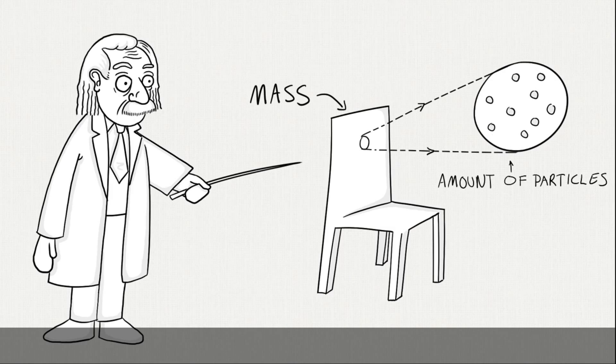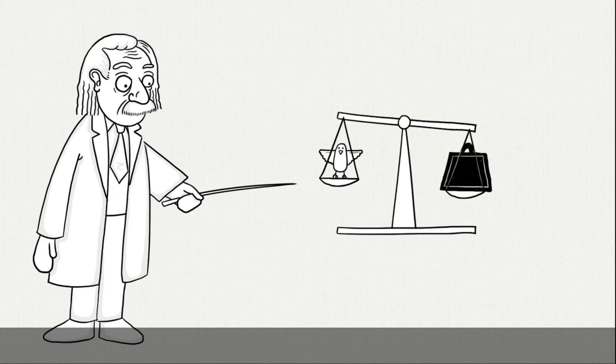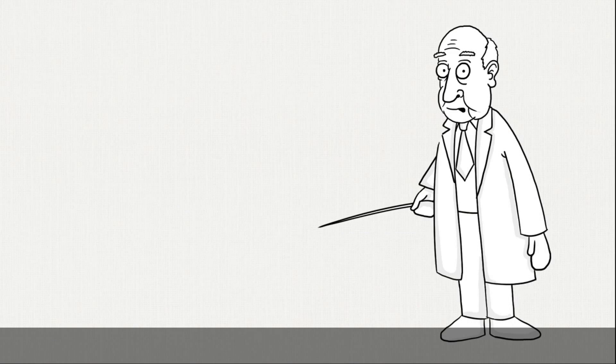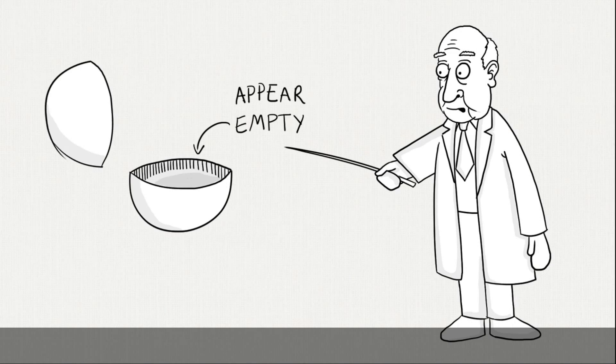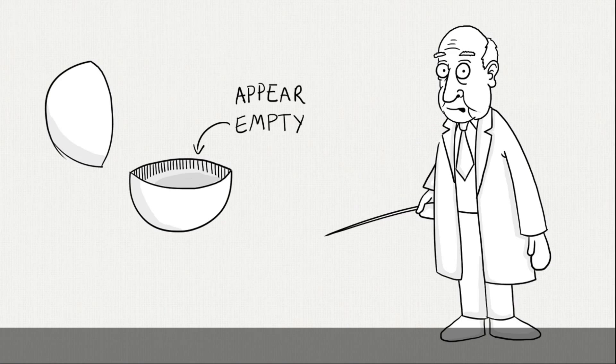Mass represents the amount of particles in an object. The more mass, the heavier it is. But in the 60s, Peter Higgs noticed that particles don't have volume. They appear empty. So how can they have mass?